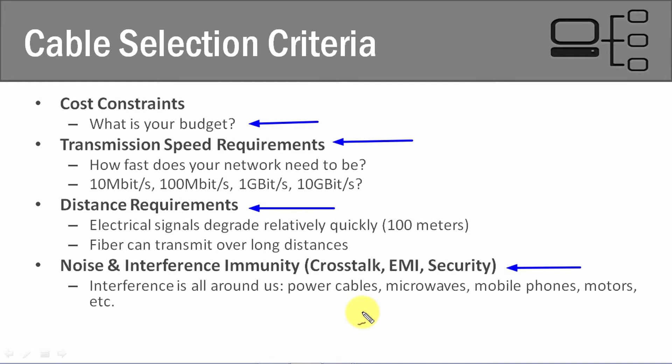We also have to think about the security of our data. What if we're on a network that has potentially classified information — if we're a government network with sensitive but unclassified information, or a corporate network with proprietary information that we don't want leaked out and we don't want somebody doing corporate espionage against us. We need to consider what's going to work best for us. If we're worried about security concerns, then fiber is going to be the best choice. If we're not so worried, then twisted pair is going to be fine.